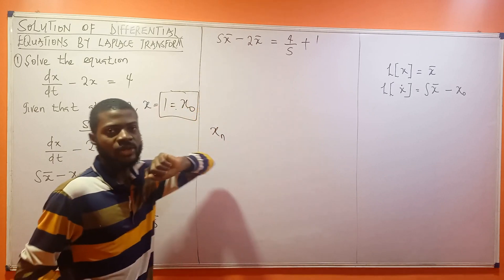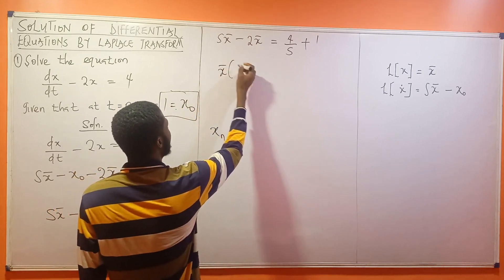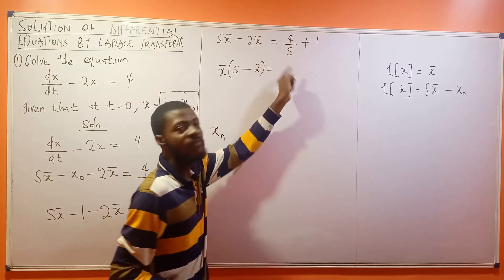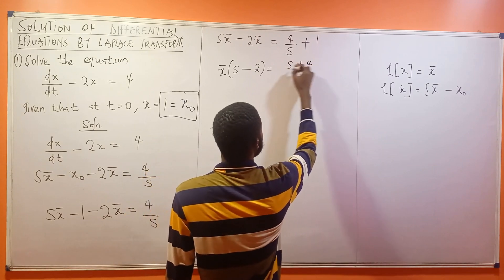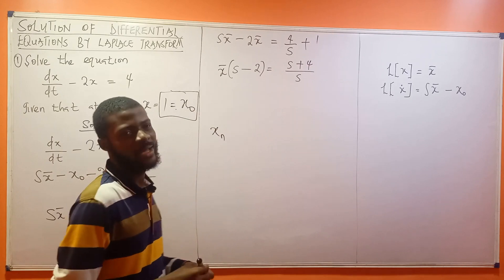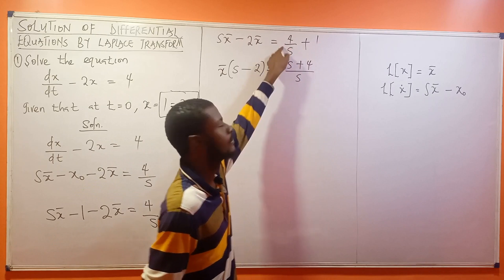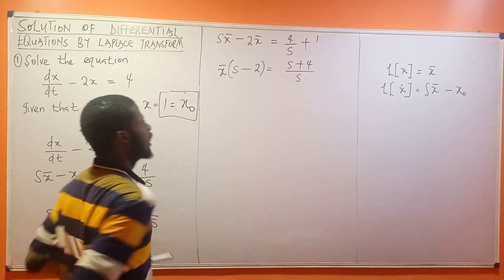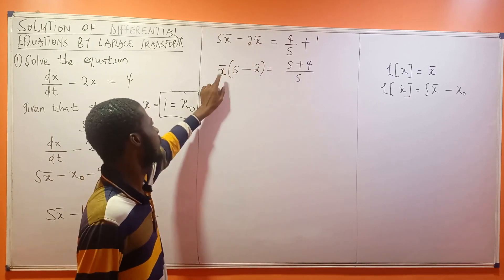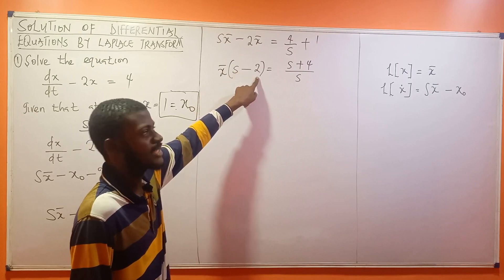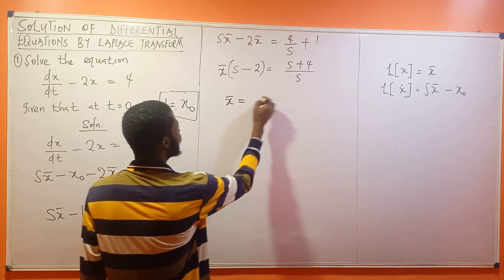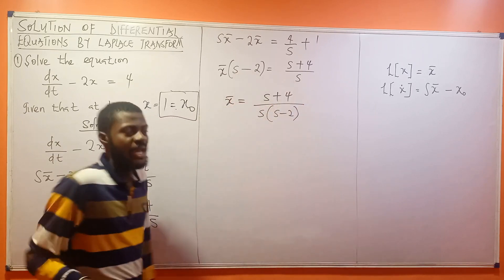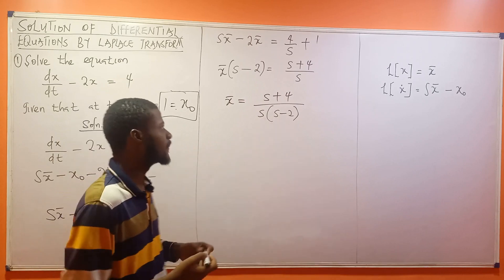Between these first two terms, what's common? S bar. So this is S bar bracket S minus 2 equal to 4 over S plus 1. Taking LCM on the right side gives S plus 4 over S. We can then divide both sides by S minus 2, so S bar equals S plus 4 divided by S times S minus 2.